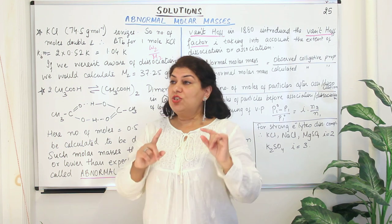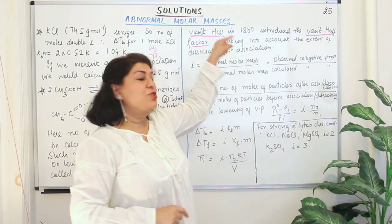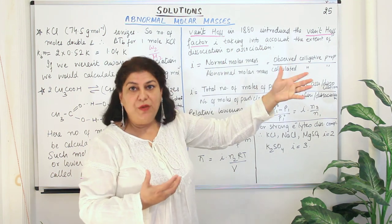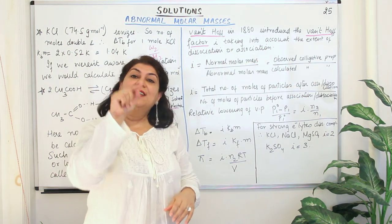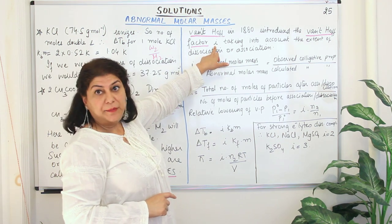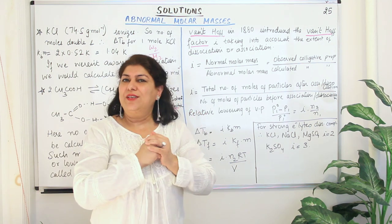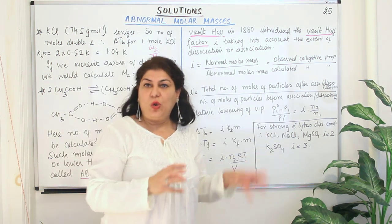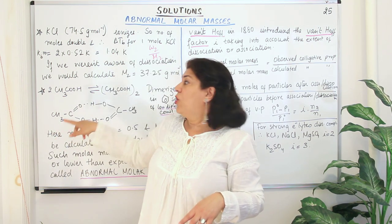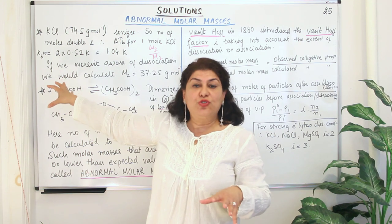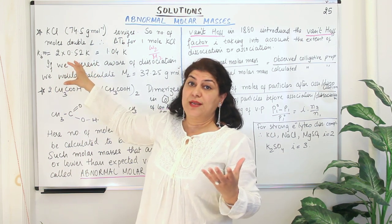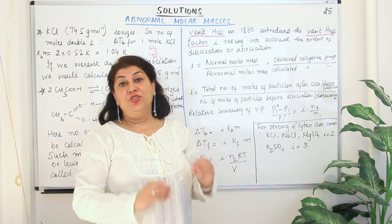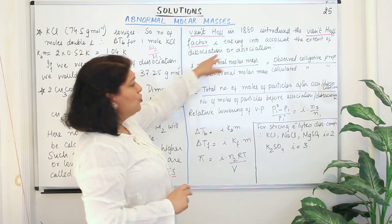What is the solution for it? The solution was found out by a scientist called Van't Hoff. In 1880, he gave a factor which was known after him as the Van't Hoff factor, represented by the small letter i. This factor was used to multiply with any of the colligative properties in order to remove the error caused due to association or dissociation, and to correct the abnormal molar mass calculation.